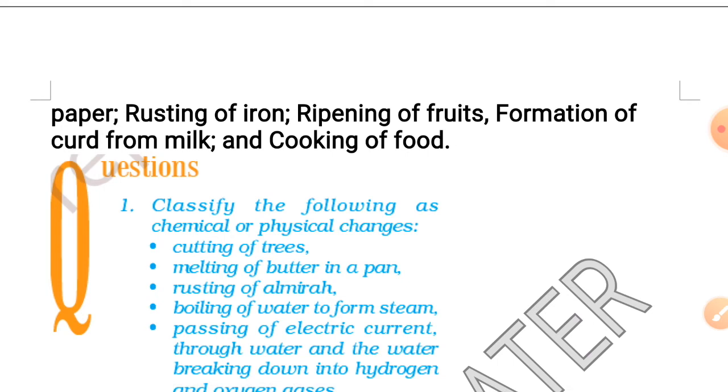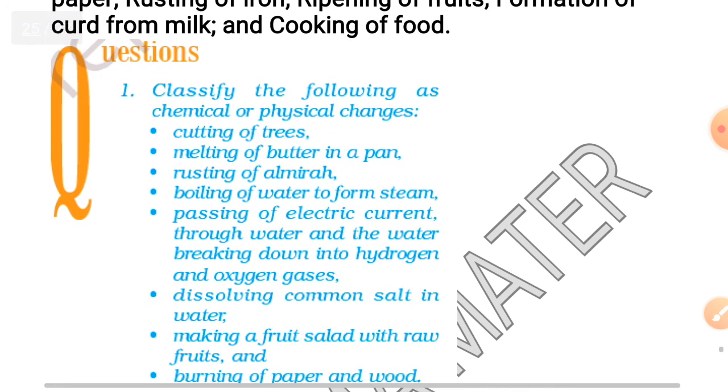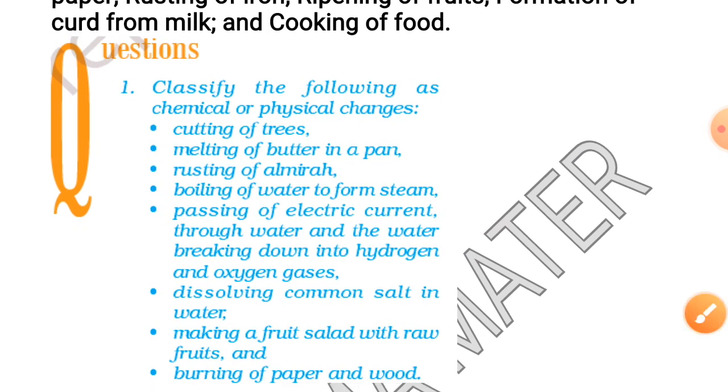Now, there is a practice session for all of you. You have to classify the following into physical change or chemical change. Let's see what they are. Cutting of tree. When a tree is cut, nothing new will form. It will remain a tree. So, physical change.